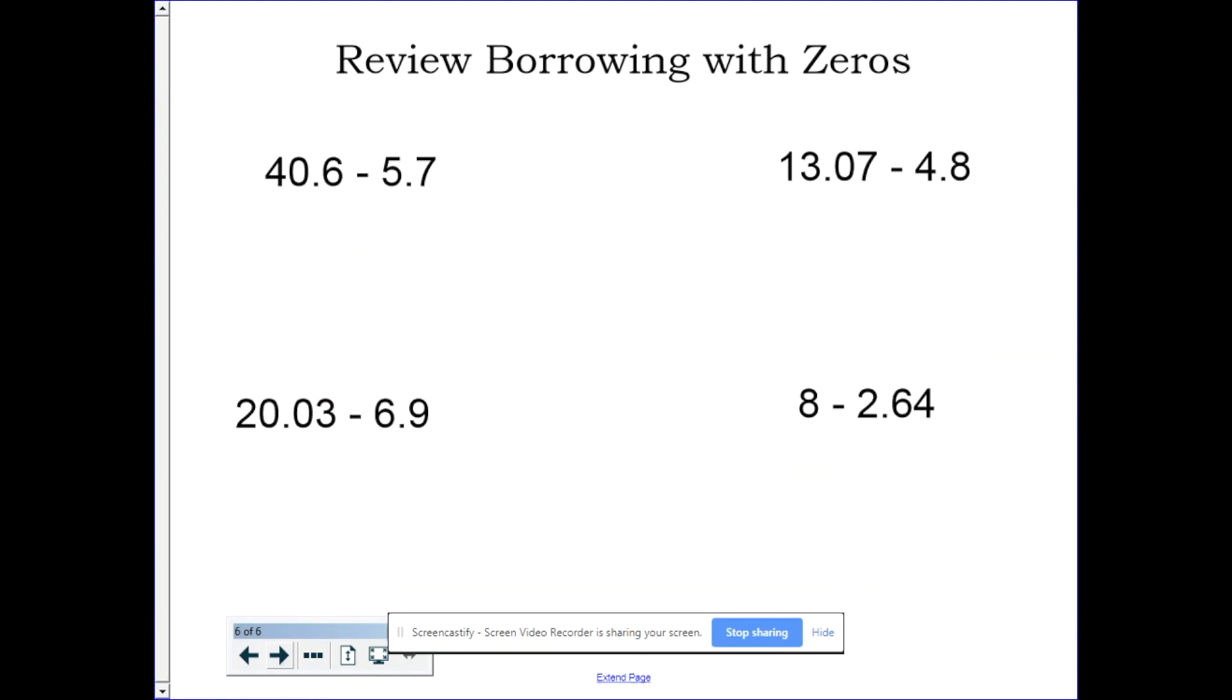Review borrowing with zeros. This can trip some people up, so I'm going to give you a strategy of how to approach it. 40.6 minus 5.7. My decimal point is lined up so I can go. 6 minus 7. I can't do that, so I'm going to borrow from the, uh-oh. How do you borrow from a zero?